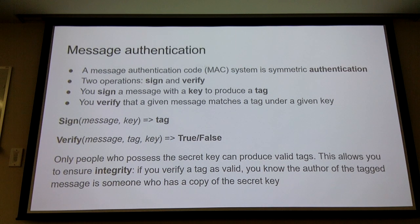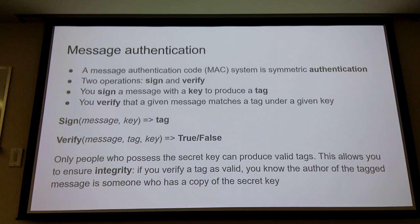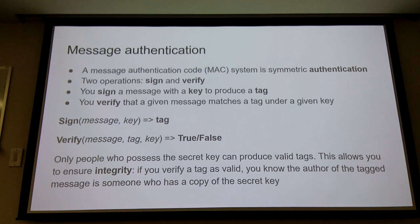A Message Authentication Code (MAC) is also symmetric, just like encryption, but it doesn't encrypt. It lets you know that the person who holds this key really produced this message. You'd usually use this in conjunction with encryption — so you'd encrypt and then MAC your encrypted value. So I'm Andrew, I share a key with Matt, I send him a message, he can decrypt it, and he can also authenticate that it really came from me.